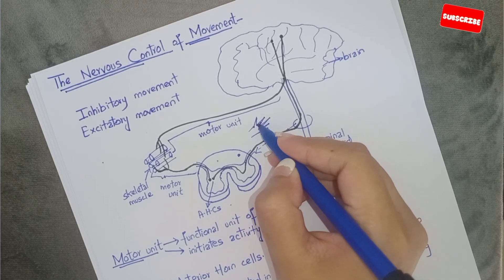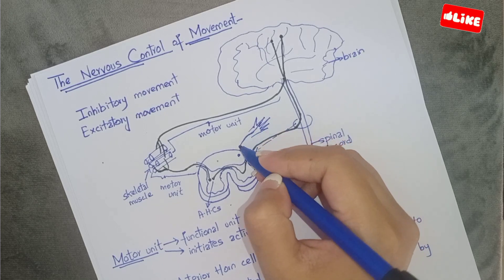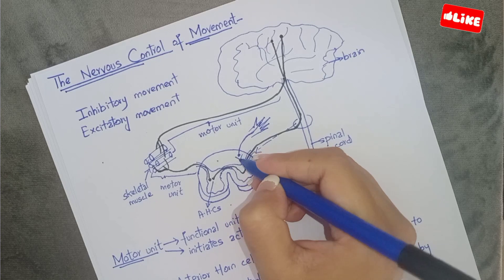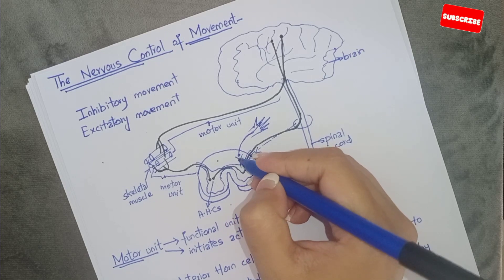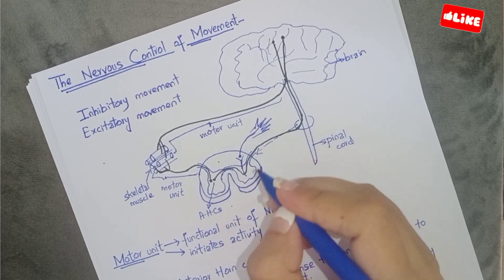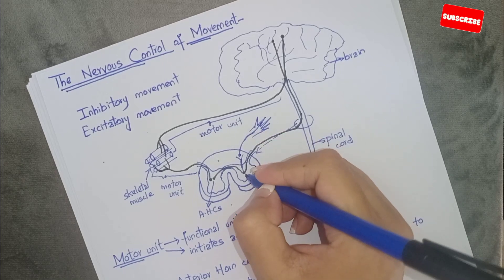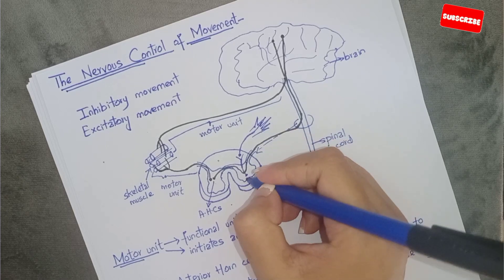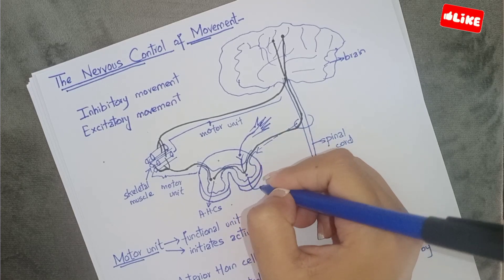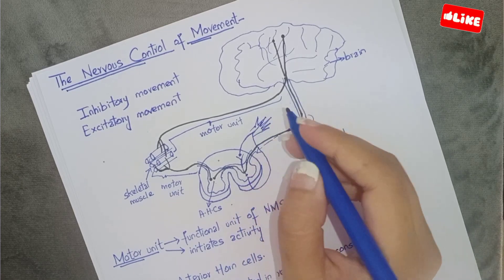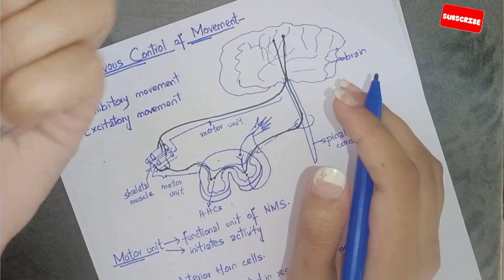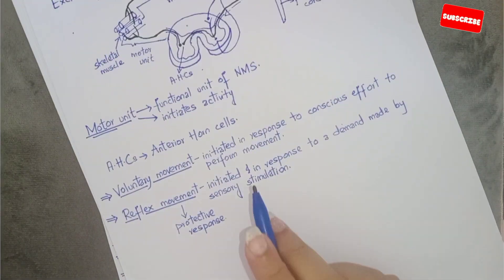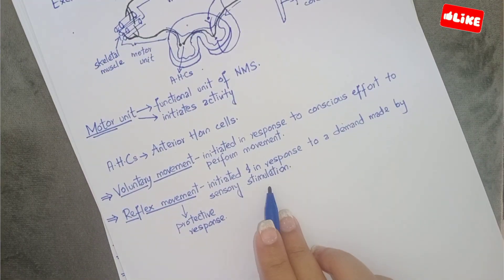We had touch receptors in our fingers. A sensory fiber was sent from the fingers to the sensory pathway. It relayed with one of the interneurones, and the anterior part of the spinal cord — the anterior horn cells — then released a motor neuron that connected with the muscle fibers. This is our reflex movement, which is initiated in response to a sensory stimulation.